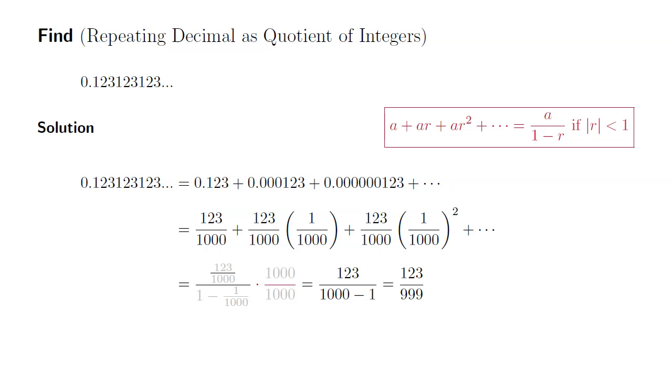Then we can go a little bit further. Since 123 and 999 are both multiples of 3, we can divide top and bottom by 3. So 123 divided by 3 is 41, and 999 divided by 3 is 333. Therefore, this repeating decimal can be written as 41 over 333.